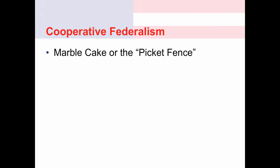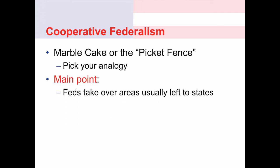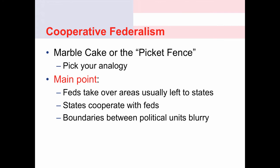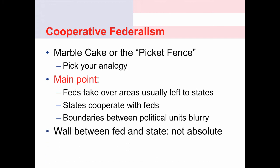Cooperative federalism is often called marble cake or picket fence federalism. The main point is that it's a situation where the federal government takes over policy areas usually left to the states, and the states cooperate with the federal government to enact those policies. For instance, the government might provide a block grant to Wyoming, and Wyoming would determine who gets the money and how, but the state is simply implementing a federal policy and distributing federal resources. This means the boundaries between national and state governments become very blurry — the wall between federal and state power that we see in dual federalism is not absolute.